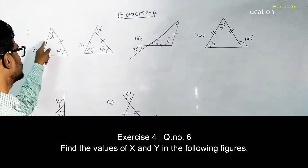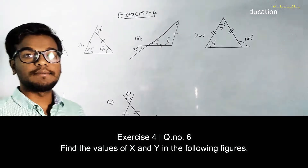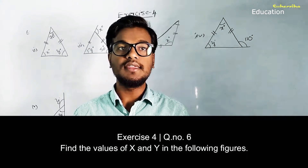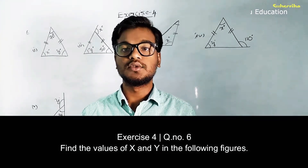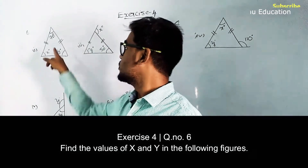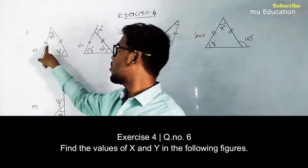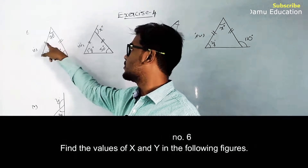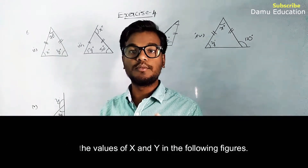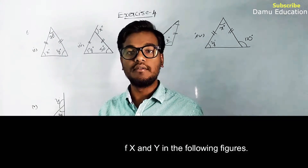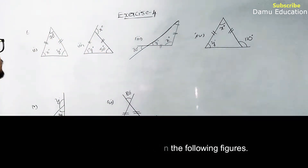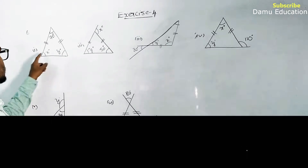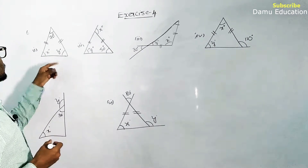For the first question, two sides are marked with double dashes, meaning they are equal in measurement. When two sides are equal, the corresponding opposite angles are also equal. This is an isosceles triangle, so the two base angles will be equal to each other. We want to find x and y.